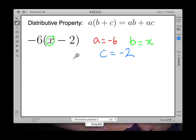So let's use our distributive property. First we want to do a times b. So that's going to be negative 6 times x. And then we're going to add a times c. Negative 6 times negative 2.